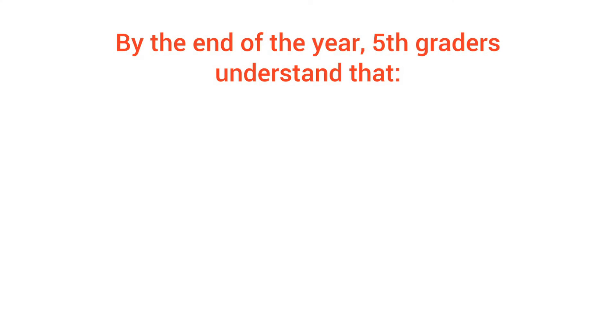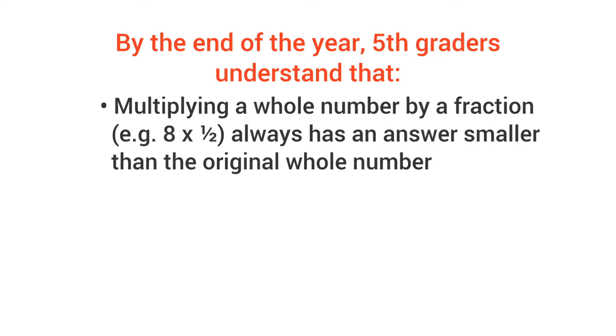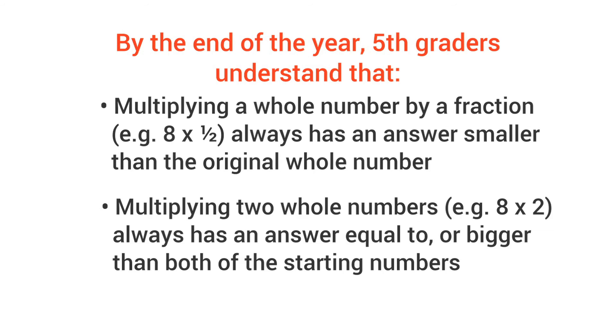So how do you know your child's on track? By summertime, 5th graders can explain that multiplying a whole number by a fraction less than 1 always has an answer smaller than the original whole number. And that multiplying two whole numbers will always give you an answer equal to or bigger than both of the starting numbers.